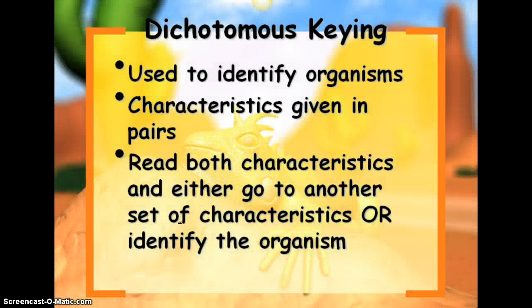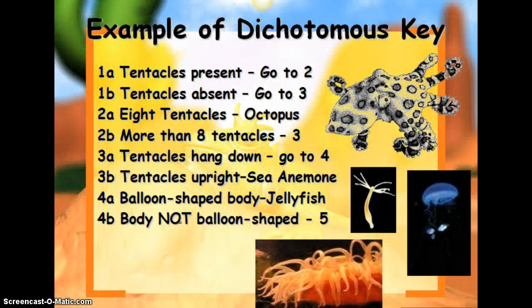Our last term here is dichotomous key. A dichotomous key is used to identify organisms. Characteristics are given in pairs — you read both characteristics and you either go to another set of characteristics or you identify the organism. We will be practicing some of these in class with a couple of worksheets.